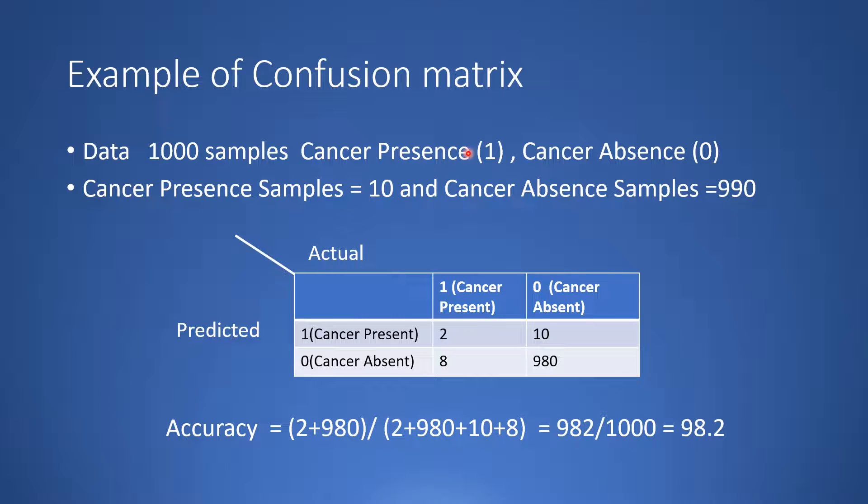You can even invert it and say that this is a positive class which is cancer absence and cancer presence is the minority class. It is the negative class. Even then, it is an imbalanced data set.